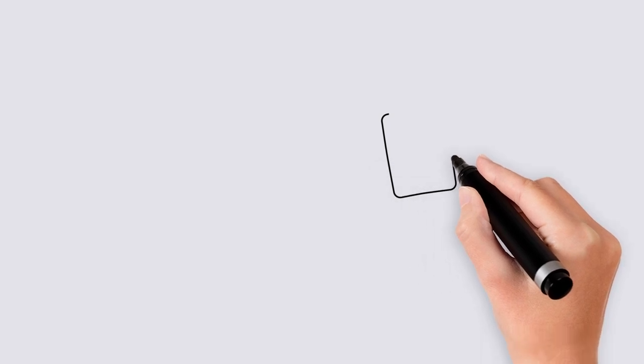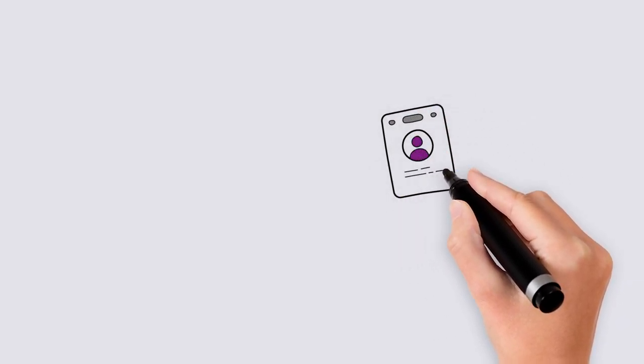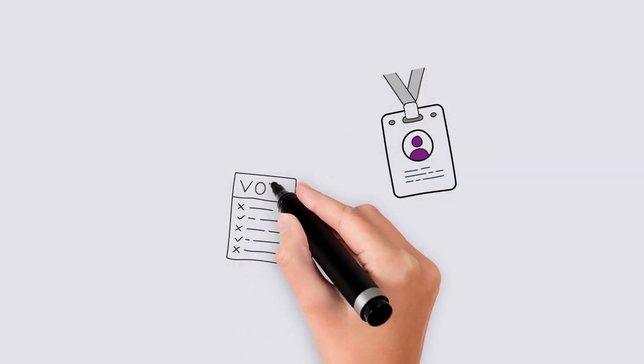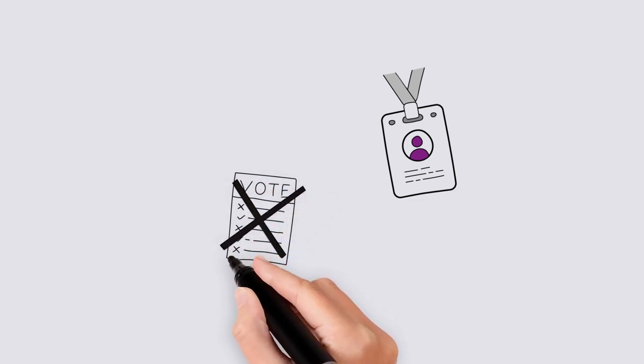Your constitution should advise if employees are considered members of the association and what their rights are. Some employees are permitted on the committee, however, are not able to vote to ensure there is no conflict of interest.